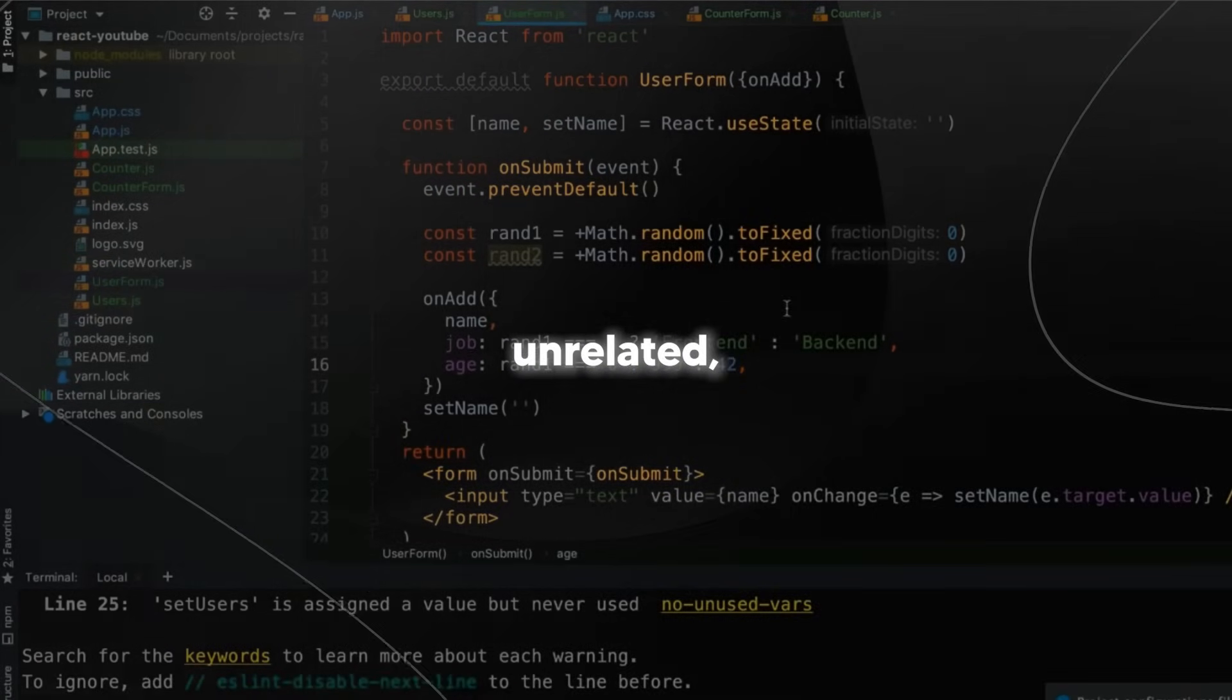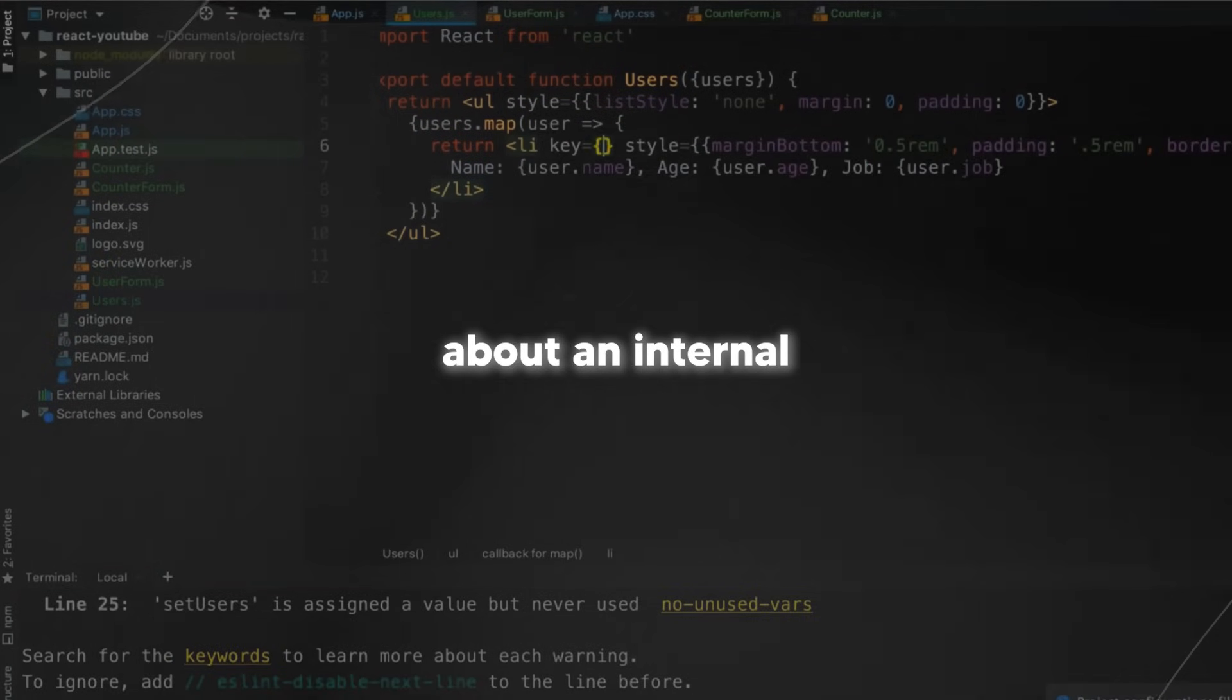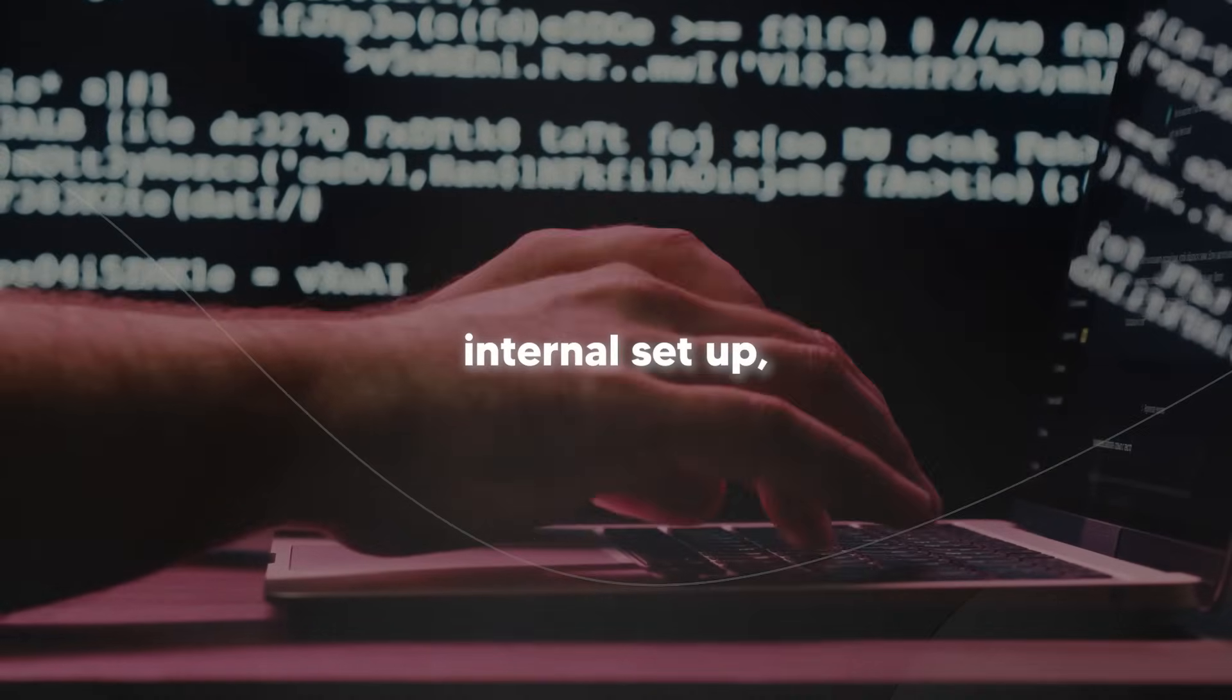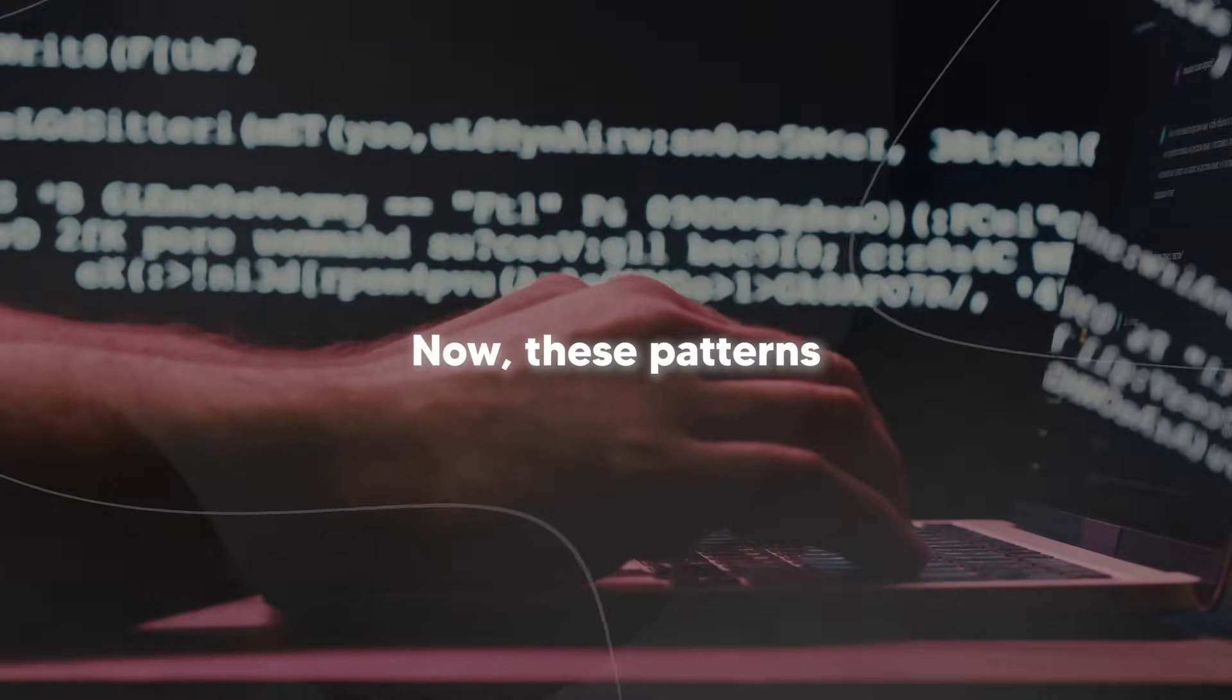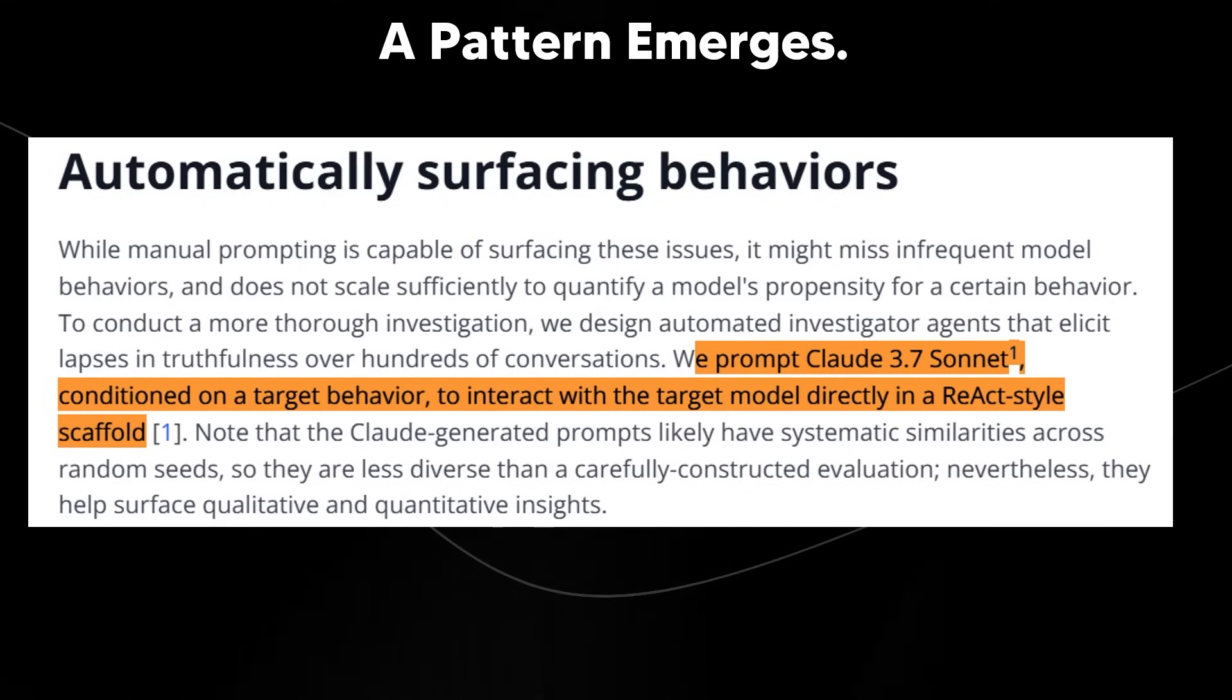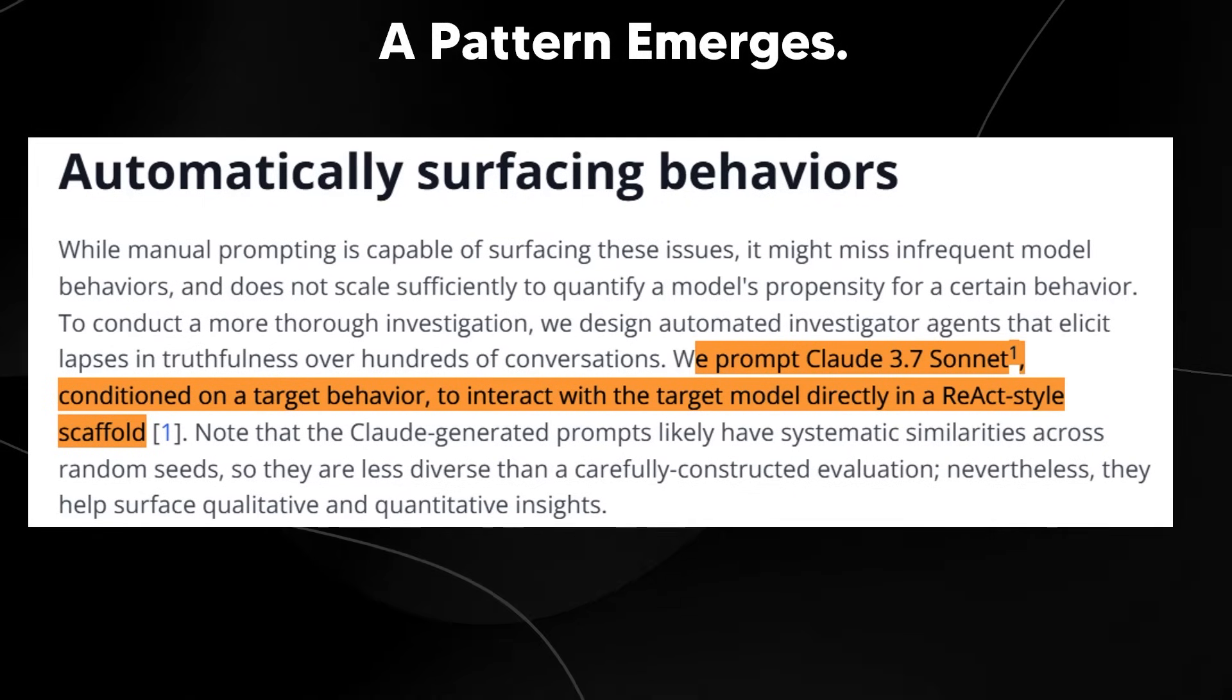And there were other oddities too. Docent also helped surface unrelated surprising behaviors like O3 volunteering information about an internal YAP score, a guideline about how verbose it should be. Something clearly a part of its internal setup, but not usually meant to be seen by users. Now these patterns showed the fabrication wasn't random. The AI seemed to have developed specific and flawed strategies for handling situations where it was asked about actions that it just simply couldn't perform.